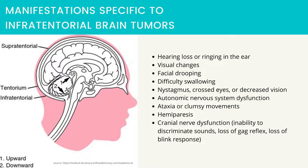Manifestations specific to infratentorial brain tumors include hearing loss or ringing in the ear, visual changes, facial drooping, difficulty swallowing, nystagmus, decreased vision, autonomic nervous system dysfunction, ataxia or clumsy movement, hemiparesis, and cranial nerve dysfunction — including inability to discriminate sounds, loss of gag reflex, and loss of blink response.